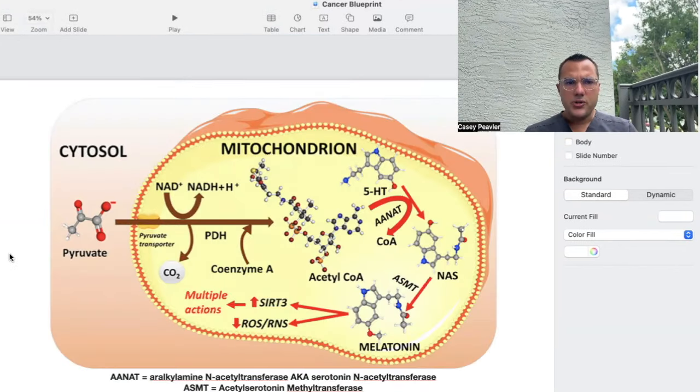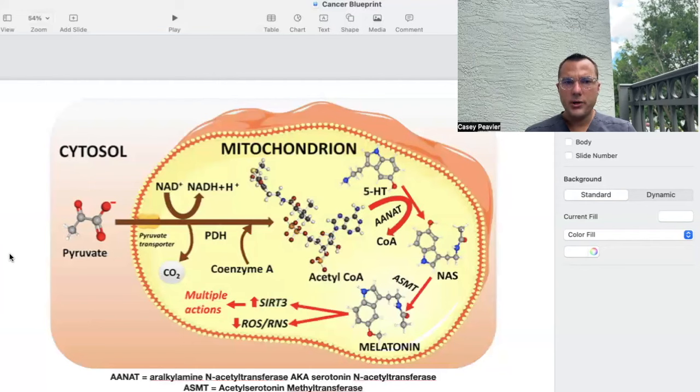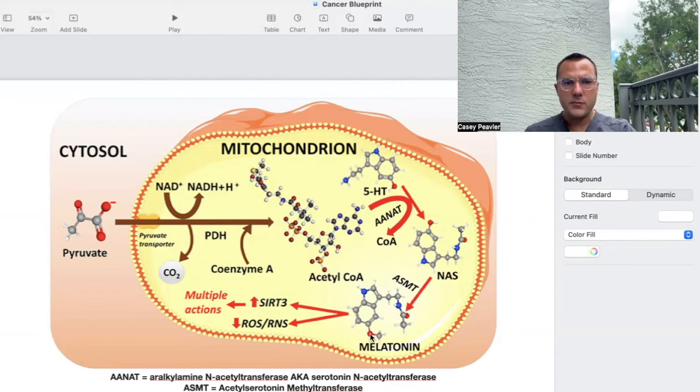This is another representation, a deeper look at the biochemistry underneath all of that. You have pyruvate, which we've talked about several times when discussing cancer, glycolysis, and energy metabolism. That gets converted into acetyl-CoA through the PDH enzyme or pyruvate dehydrogenase. Acetyl-CoA helps in the conversion of 5-HT to this NAS intermediate, and then subsequently gets converted to melatonin. AANAT stands for arylalkylamine N-acetyltransferase, or serotonin N-acetyltransferase. The ASMT is acetylserotonin methyltransferase. Melatonin then has its various actions that we'll talk about in nauseating detail in the future.